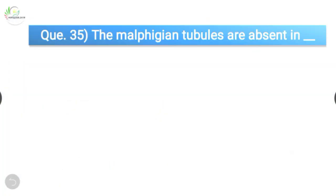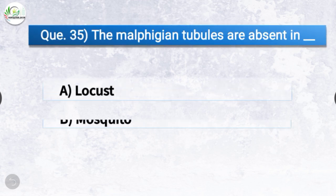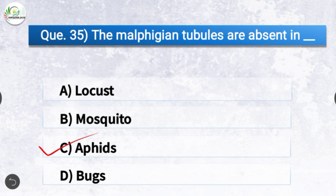Question number thirty-five: The Malpighian tubules are absent in? The options are locust, mosquito, aphids, or bugs. The correct answer is option C, aphids — Malpighian tubules are absent in aphids.